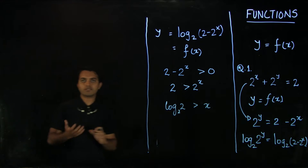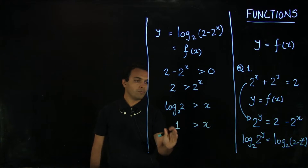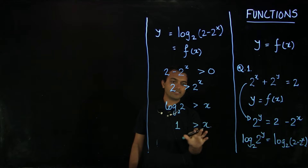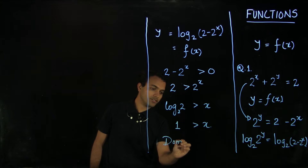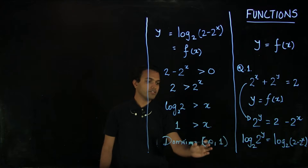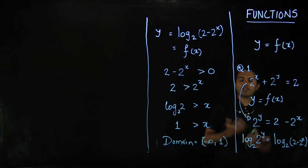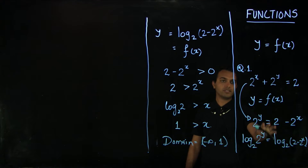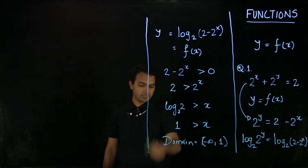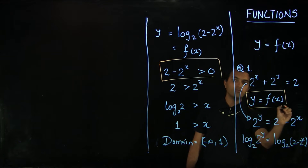We could take log with respect to a different base, but since we are working with base 2 here, we take log base 2 on both sides. This gives us 1 > x, so the domain is defined by x < 1, which is the set from minus infinity to 1. This was a slightly challenging example because the equation of the function was not given directly — we had to derive the form y = f(x) from the implicit equation, then use the property of log(x) to figure out the domain.